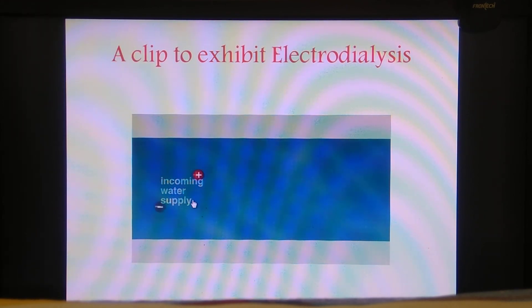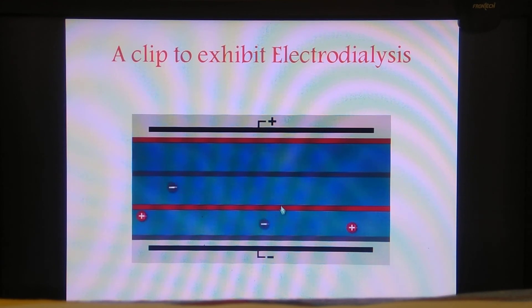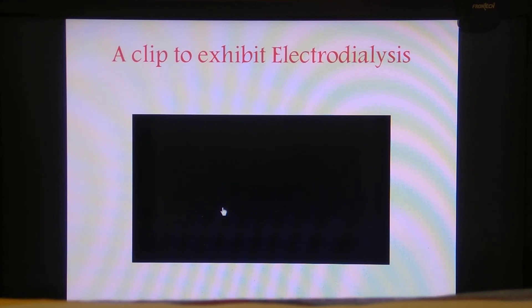This is the incoming water supply which contains the cations and anions. We have got the electrodes, the positive and the negative electrode. The anions are attracted towards the positive electrode and the cations are attracted towards the negative electrode. When we have a layered arrangement of membranes, the red indicating the cation selective membrane and the gray indicating the anion selective membrane, you can see the anions coming out and the cations coming out and we are left out with the portable, that is usable drinking water.